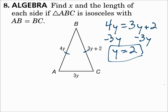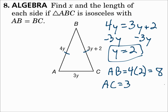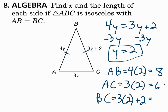Substitute y = 2 into each side length. AB is 4y = 4(2) = 8. AC is 3y = 3(2) = 6. And BC is 3y + 2 = 3(2) + 2 = 8. AB and BC are both 8. They should be the same because those were the two sides stated to have equal lengths.